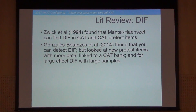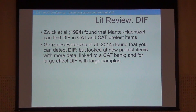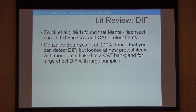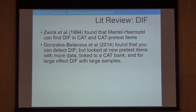As for differential item functioning, one study using a now-standard statistic tried to find DIF in CAT data and didn't find much. But they were looking at pre-test items — they were delivering a CAT and then had a block of new pre-test items rendered afterwards. So that data had non-random aspects but no range restriction, meaning she was able to find the DIF function, especially with larger samples. But this wasn't quite the question I was trying to answer, since I was looking specifically at CAT data.